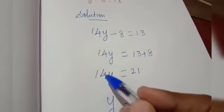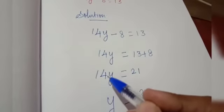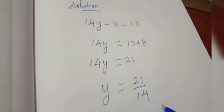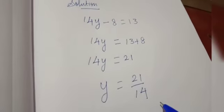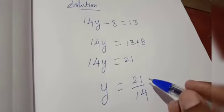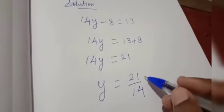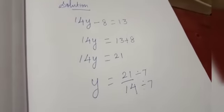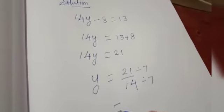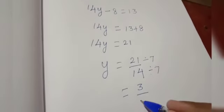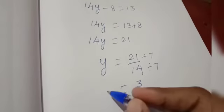So y is equal to 21 by 14. In between 14 and y there is a product sign, so I have brought 14 to the right side denominator as a divide. And this we can simplify — both are divisible by 7. How many 7s are 21? 3 sevens are 21. And 2 sevens are 14. So y is equal to 3 by 2.